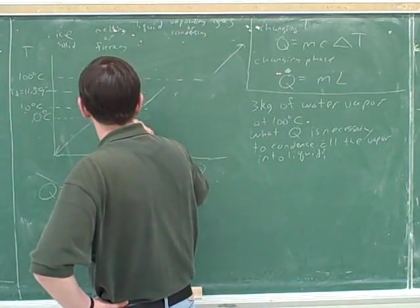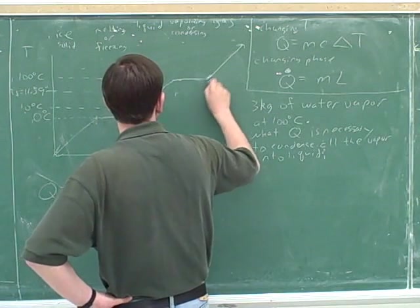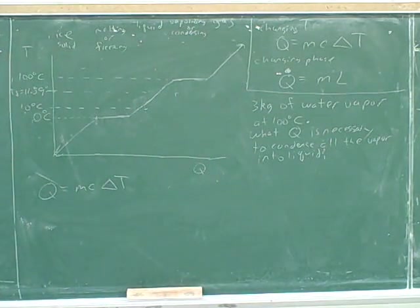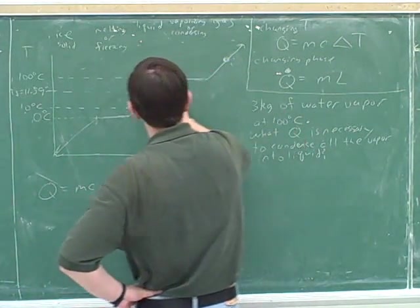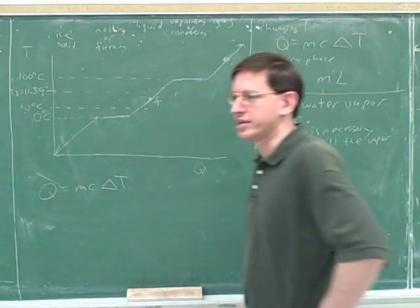So what would be the initial and final points in our graph? Water vapor is here. So let's label the initial and the final points. Your first guess is that this is the initial point and this is the final point.